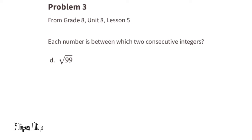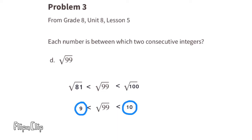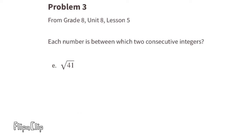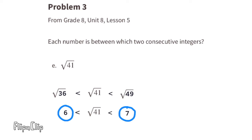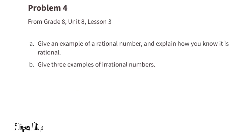Part d: the square root of 99 falls somewhere between the square root of 81 and the square root of 100, because 9 times 9 equals 81 and 10 times 10 equals 100, so it falls between 9 and 10. Part e: the square root of 41 falls between the square root of 36 and the square root of 49, because 6 times 6 equals 36 and 7 times 7 equals 49, so it falls between 6 and 7.